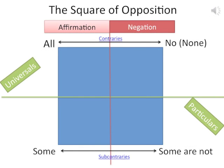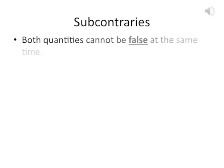Now let's look at subcontraries. Subcontraries are similar to contraries except we're dealing with particular quantities — the quantities of 'some' and 'some are not.' In this case, both quantities cannot be false at the same time.